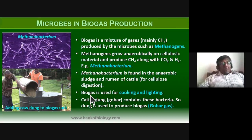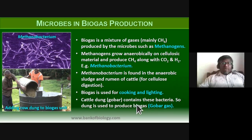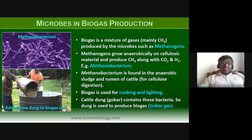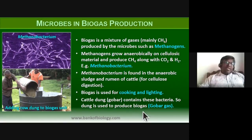Biogas is used for cooking and lighting purposes. Cattle dung or gobar — called sagni gas in Kannada — contains this bacterium Methanobacterium. This dung is used to produce biogas or gobar gas; the cow dung is used to produce the biogas.